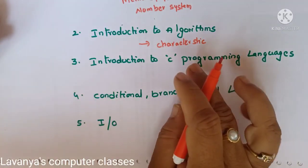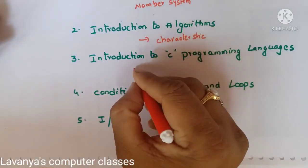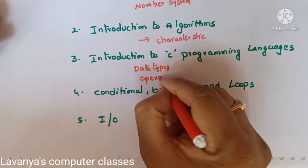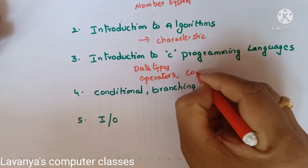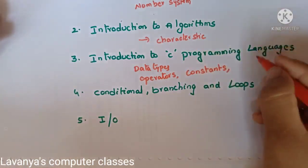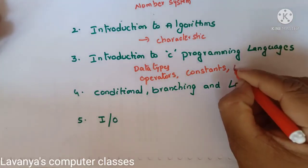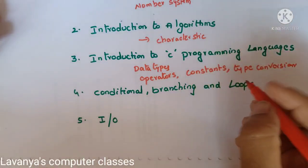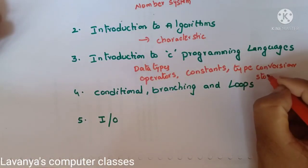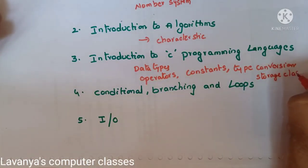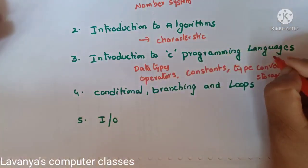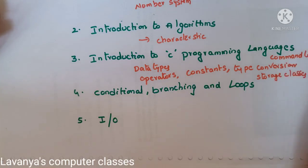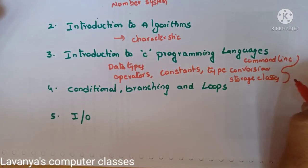In the Introduction to C Programming Language — a very lengthy chapter — data types are important questions. Operators, constants, and type conversion (also called typecasting) are important questions. Then enum and storage classes — storage classes is a very, very important question. Then command line arguments. From storage classes, type conversion, and command line arguments, one question is compulsorily coming in the theory questions.